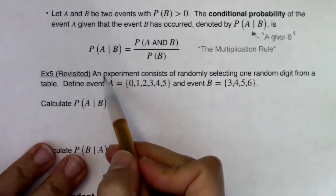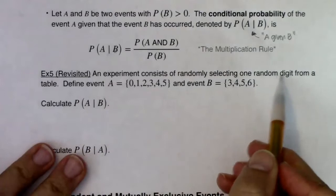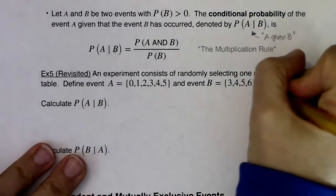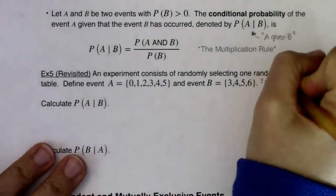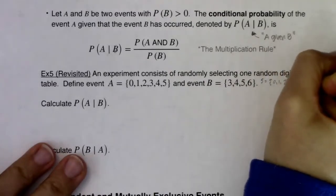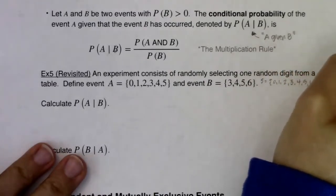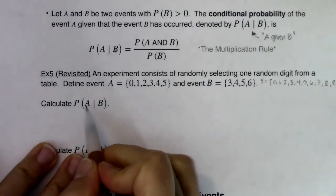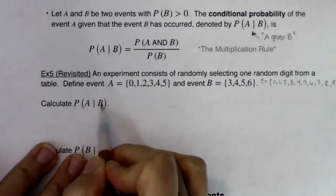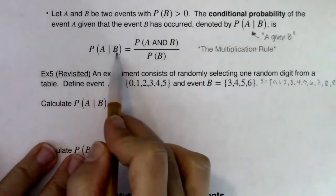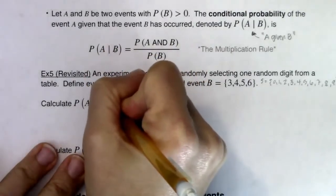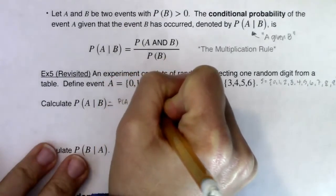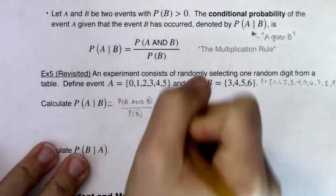Let's take a look at Example 5 again. An experiment consists of randomly selecting one digit from a table with defined events A and B. The sample space is all single digits: 0, 1, 2, all the way up to 9. Let's play this formula out. The letters in the parentheses map to the formula: numerator is probability of A and B, denominator is probability of B.